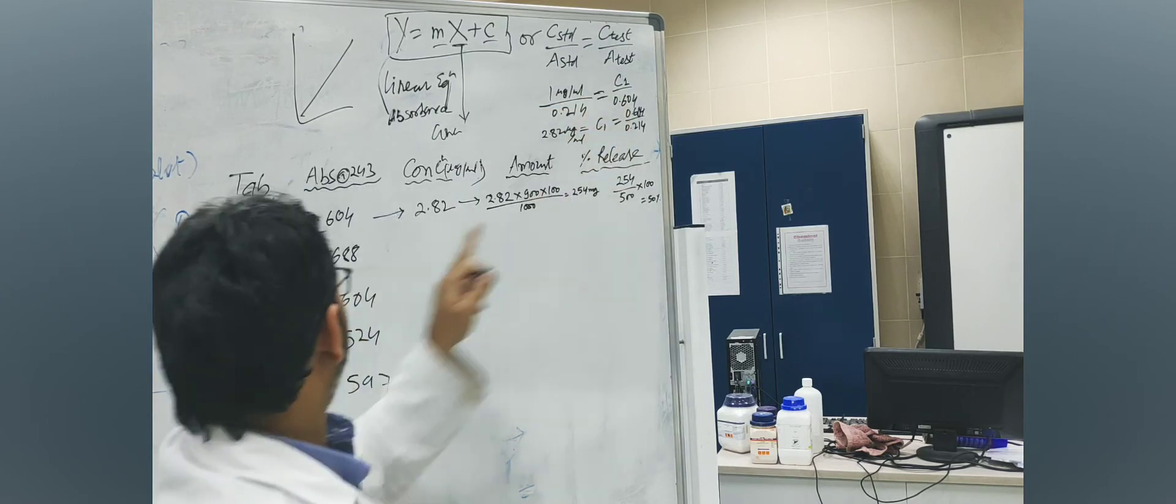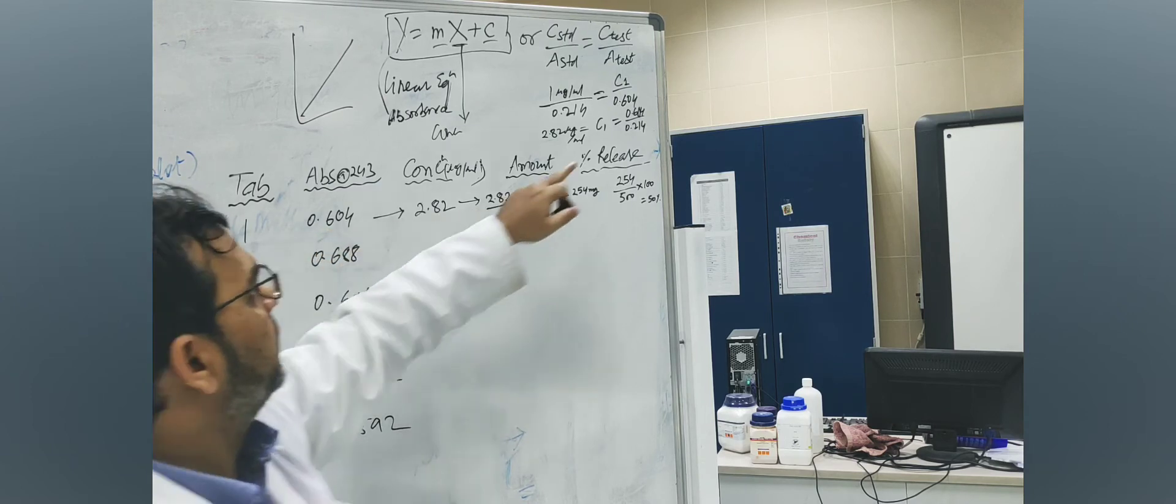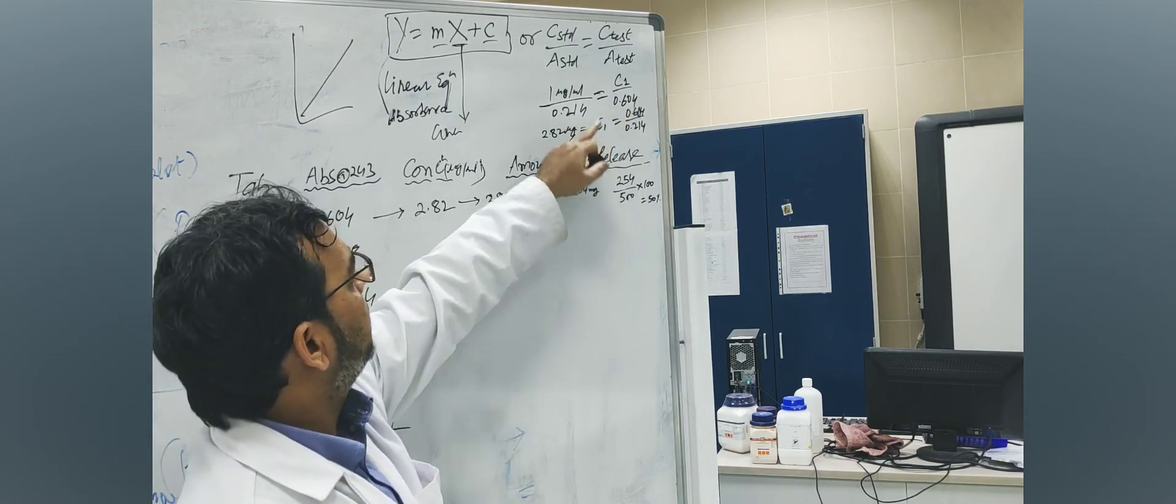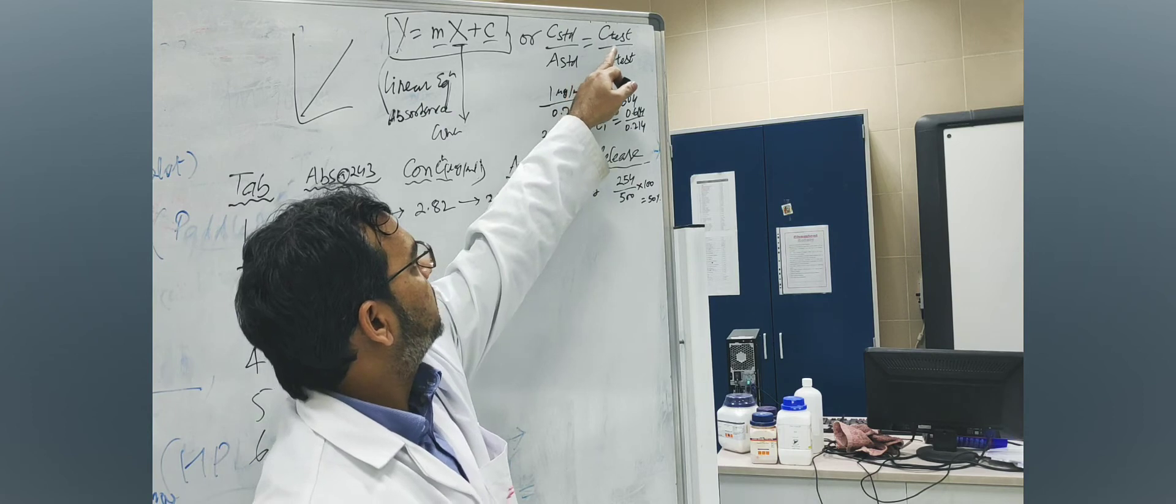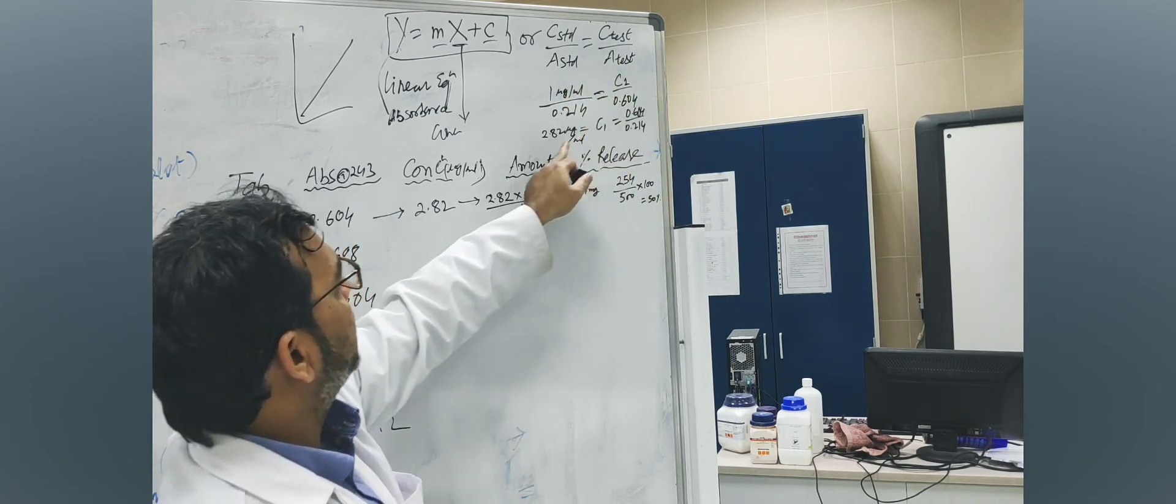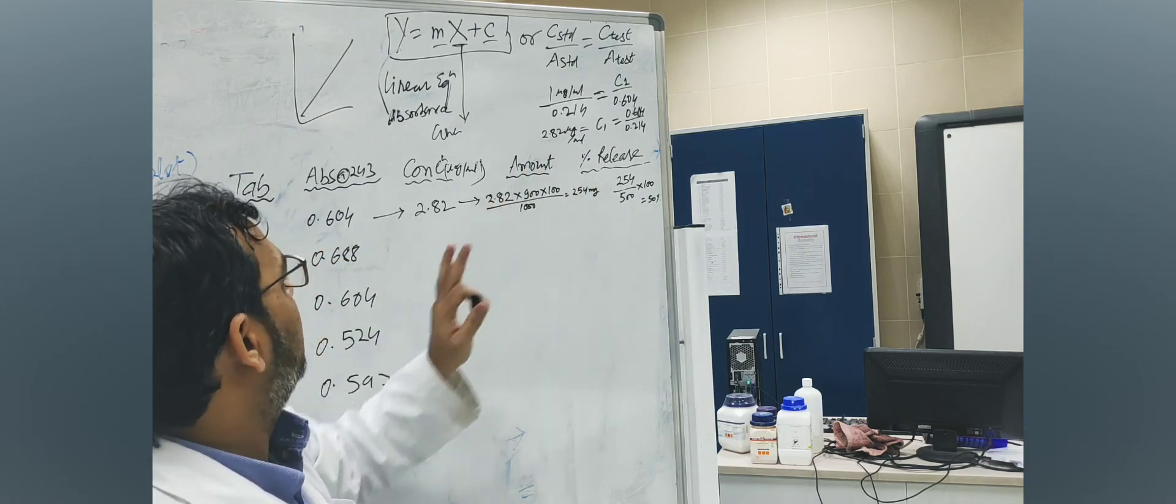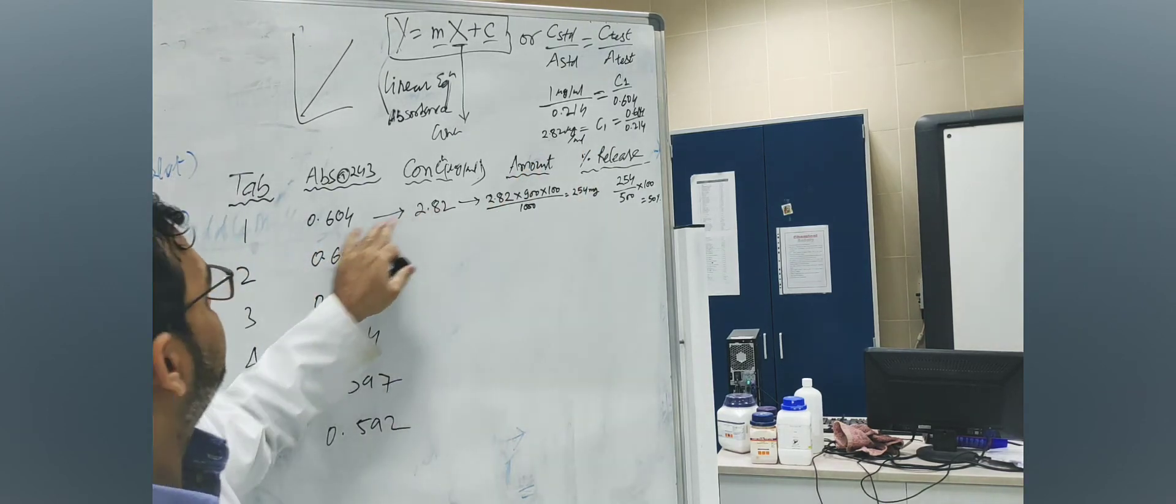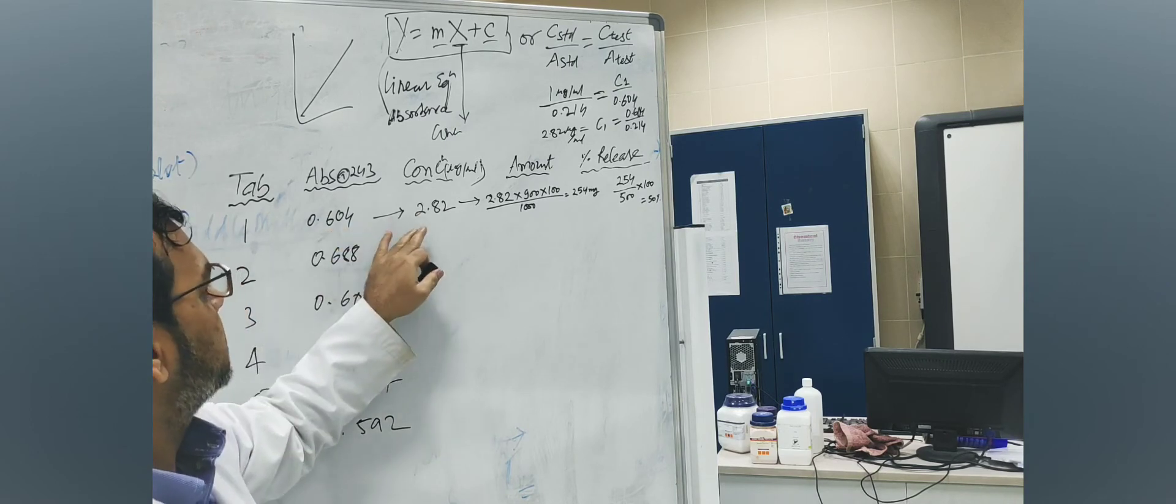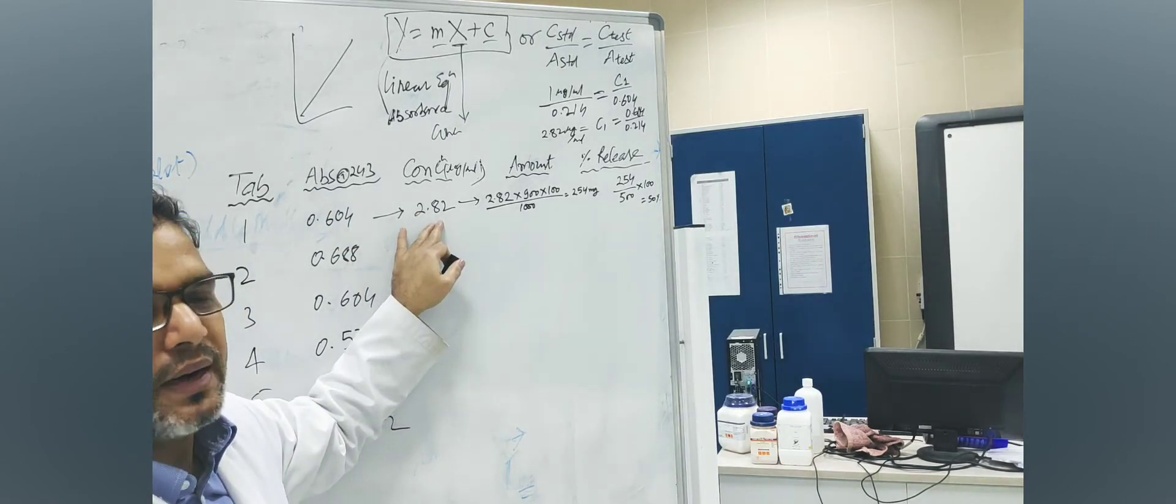Here the absorbance of test number 1, tablet number 1 was 0.604. I put it here and then I calculated the concentration of the first tablet. So C1 by this way comes out 2.82 microgram per mL. So it means that this absorbance means 2.82 microgram per mL.